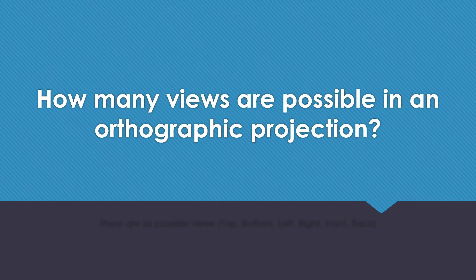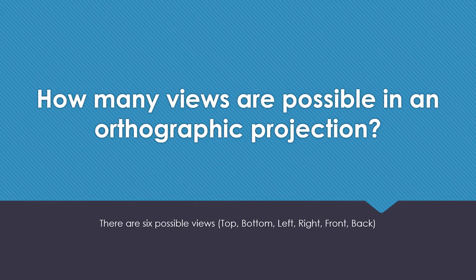How many views are possible in an orthographic projection? There are six possible views: top, bottom, left, right, front, and back.